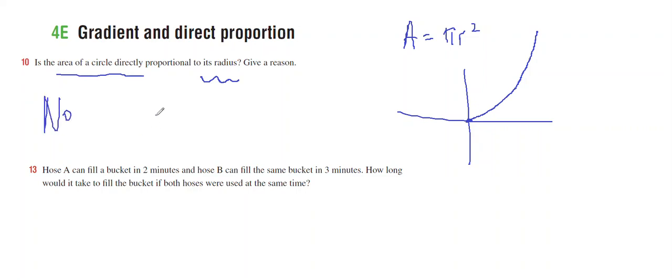It's directly proportional to the square of the radius. So no, it's not directly proportional to its radius. The area varies with the radius squared.